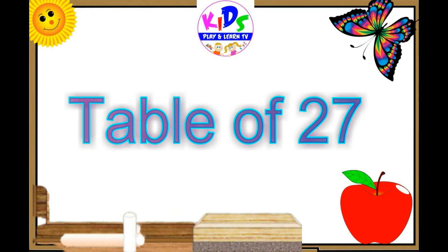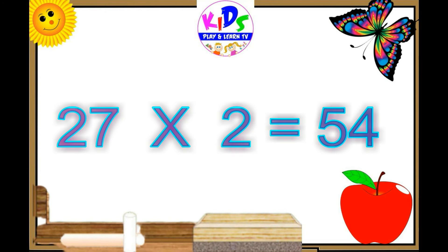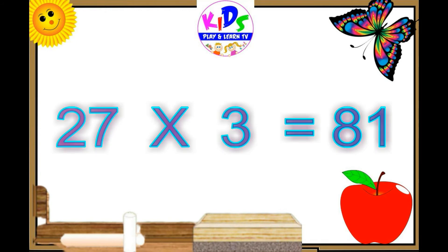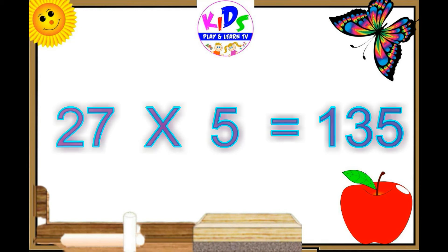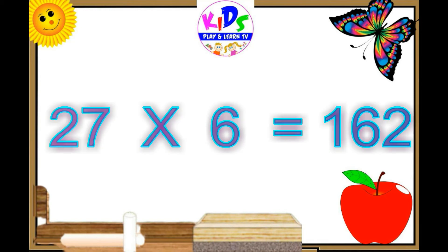Hello my dear students. Today we are going to learn table of 27. 27 ones are 27. 27 twos are 54. 27 threes are 81. 27 fours are 108. 27 fives are 135. 27 sixes are 162.